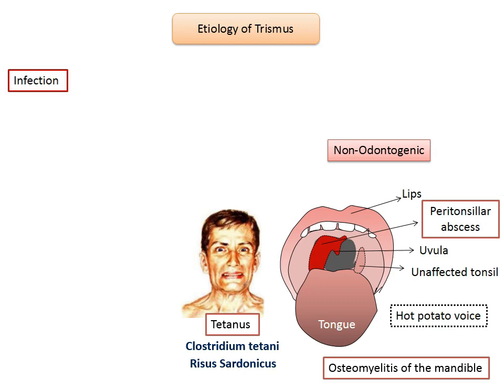Tetanus is followed by stiffness of the face and difficulty in chewing and swallowing. If the muscles of facial expression are involved, the corners of the mouth are drawn back, the lips protruded, and the forehead is wrinkled, giving the characteristic appearance of risus sardonicus. Treatment consists of administration of antitoxin, preferably human tetanus immunoglobulin, thorough wound debridement, antibiotics (usually penicillin), and sedatives to control muscle rigidity and spasm.